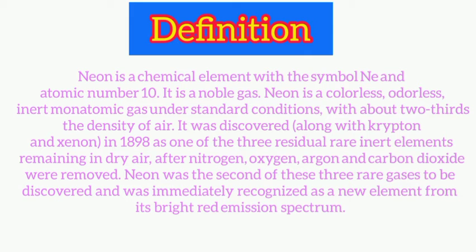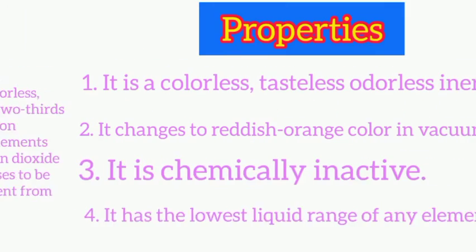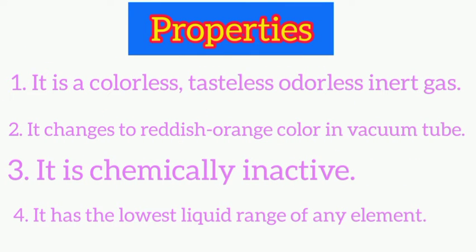Neon was the second of these three rare gases to be discovered, and was immediately recognized as a new element from its bright red emission spectrum. Now let's see its properties.